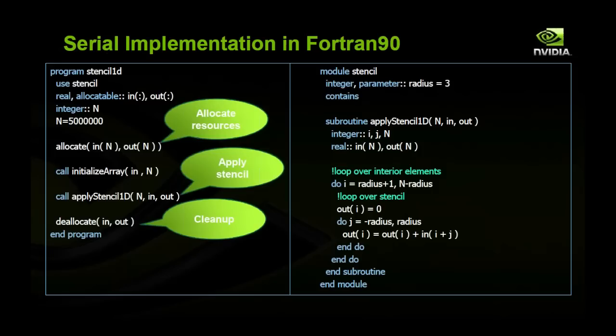Now let's look at the serial code in Fortran 90. Here we have a program where the first thing we do is allocate our resources. We have variables — in this case, 'in' and 'out' — which are two arrays, and we allocate them of size n. Then we call some function to initialize those arrays. Then we apply the stencil using a function call, which I have shown on the right. Finally, we deallocate the memory.